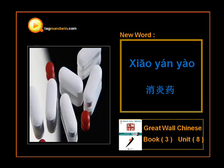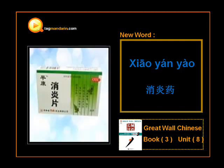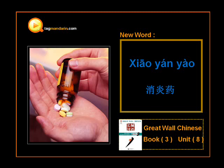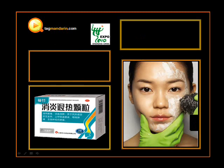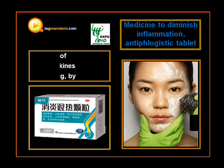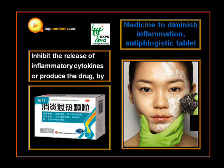Xiao Yan Yao inhibits the release of inflammatory cytokines, or produces its effect by inhibiting the generation of inflammatory factors, so as to reduce the inflammation, subside the swelling, and ease the pain.